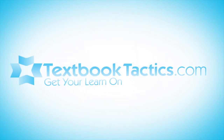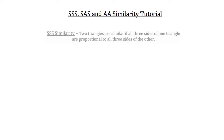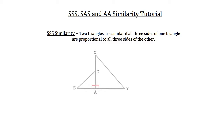This is the SSS, SAS, and AA similarity tutorial. Let's begin with Side-Side-Side similarity. Two triangles are similar if all three sides of one triangle are proportional to all three sides of the other. An example of this would be these two triangles: the smaller triangle on the left, triangle ABC, and the larger triangle on the right, triangle AXY.